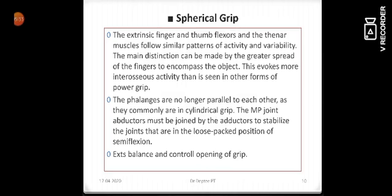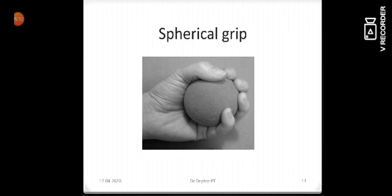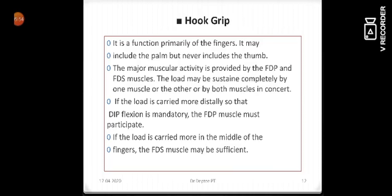Then we have a spherical grip. The extensor finger and thumb flexors and the thenar muscles follow similar patterns as in the cylindrical grip. The only difference is that the fingers are not parallel to each other here. They are spread about and thumb again is in opposition. So this is a typical spherical grip.